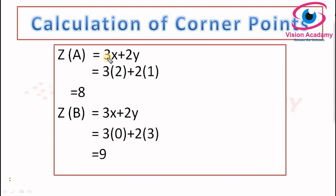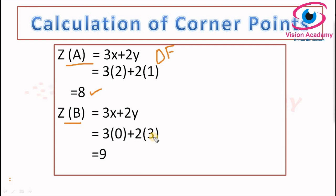We obtained two corner points from the graph. At corner point A, x is 2 and y is 1. At corner point B, x is 0 and y is 3. We apply these values to the objective function, which is Z minimization = 3x plus 2y. At corner point A: 3 into 2 plus 2 into 1 equals 6 plus 2 equals 8. At corner point B: 3 into 0 plus 2 into 3 equals 0 plus 6 equals 6.